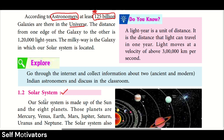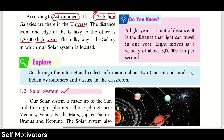The distance from one edge of a galaxy to the other edge is 1,20,000 light years. Light year is the unit of distance. It is the distance that light can travel in one year.